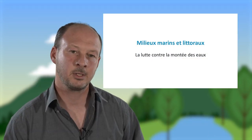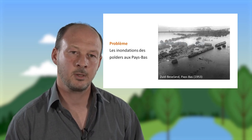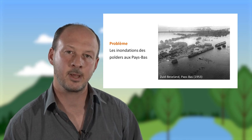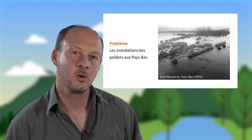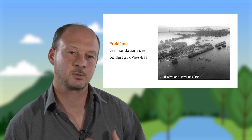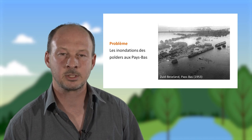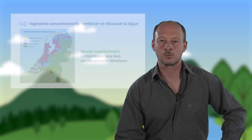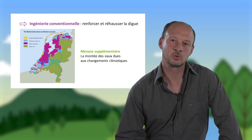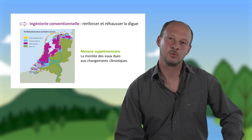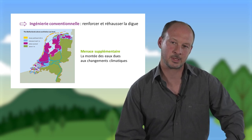Tout d'abord, on va parler de milieux marins et littoraux et de lutte contre la montée des eaux. Un exemple concret, ce sont les inondations qui ont lieu dans les polders aux Pays-Bas. Ces inondations, comme à Zuid-Beveland en 1953, ont été responsables de très nombreuses victimes, d'animaux de ferme noyés, de terres agricoles inondées et de bâtiments détruits. On comprend bien cela en regardant la topographie des Pays-Bas, avec les zones en rose sur la carte situées sous le niveau de la mer, protégées par un cordon de digues et de dunes.